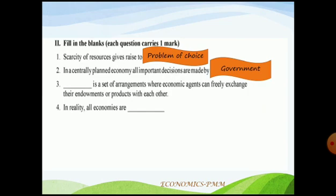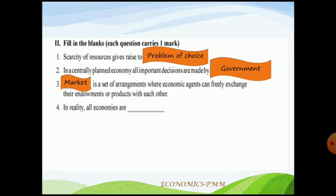Third blank: 'Dash' is a set of arrangements where economic agents can freely exchange their endowments or products with each other. The answer is market. A market is a set of arrangements where economic agents can freely exchange their endowments or products with each other.